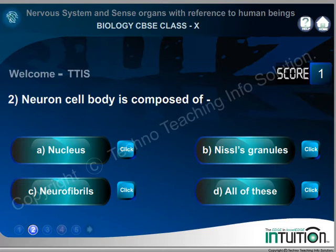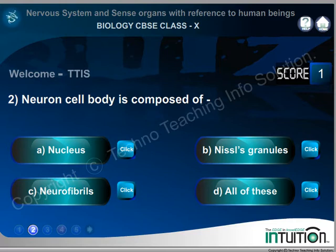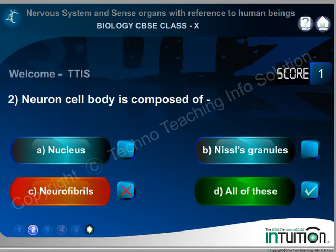Neuron cell body is composed of: A. Nucleus, B. Nissl's granules, C. Neurofibrils, D. All of these. Wrong answer shown. Right answer is D. All of these.